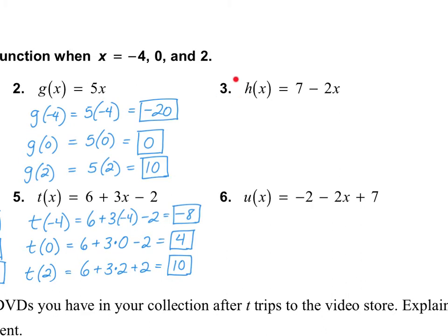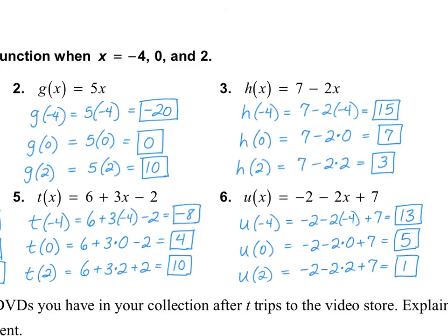Now I would like you to try numbers 3 and 6 on your own. Pause the video and turn it back on when you're done. For number 3: H of negative 4 is 15; H of 0 is 7; H of 2 is 3. For number 6: U of negative 4 is 13; U of 0 is 5; and U of 2 is 1.